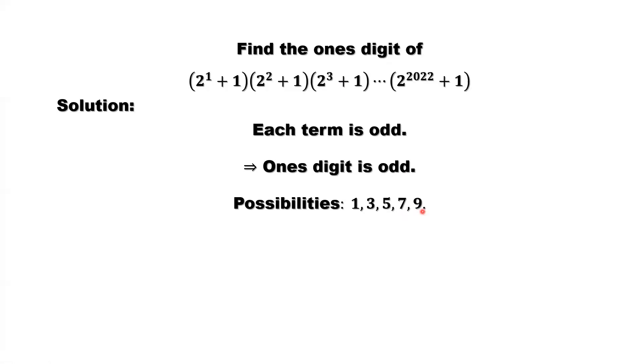We still don't know which one is the one's digit for this product. Check this carefully. We find this one: 2 squared plus 1, which is 5.